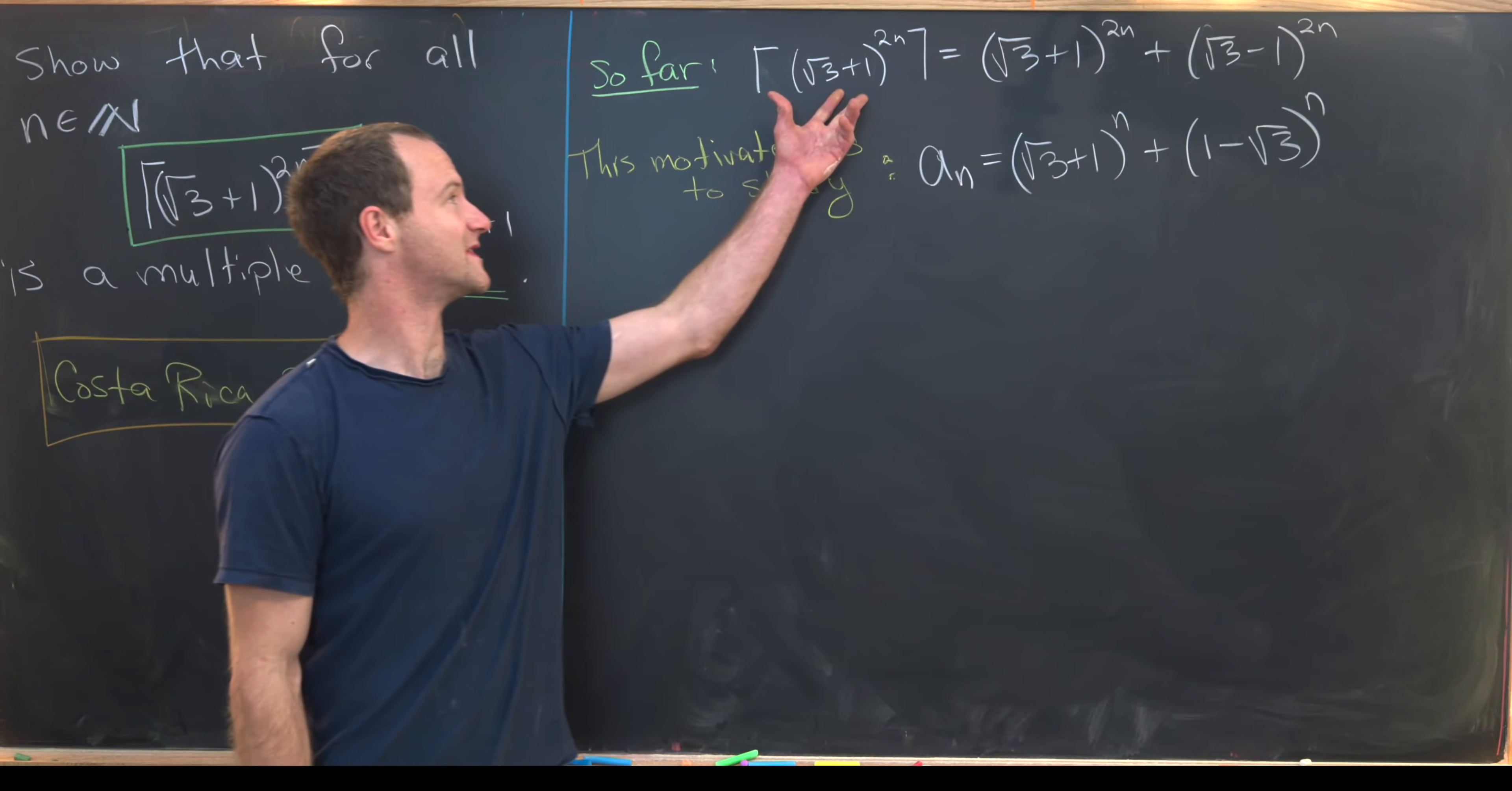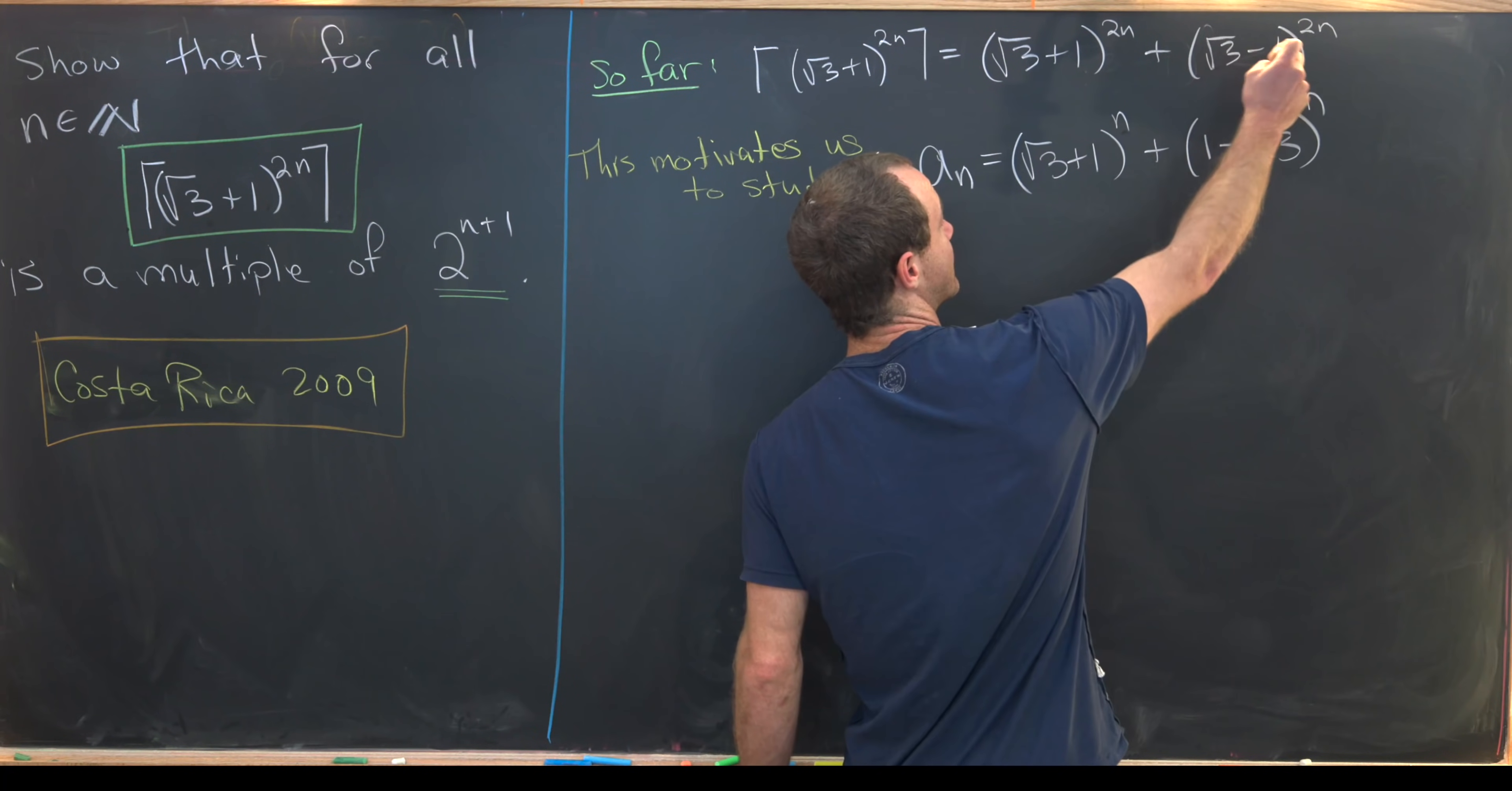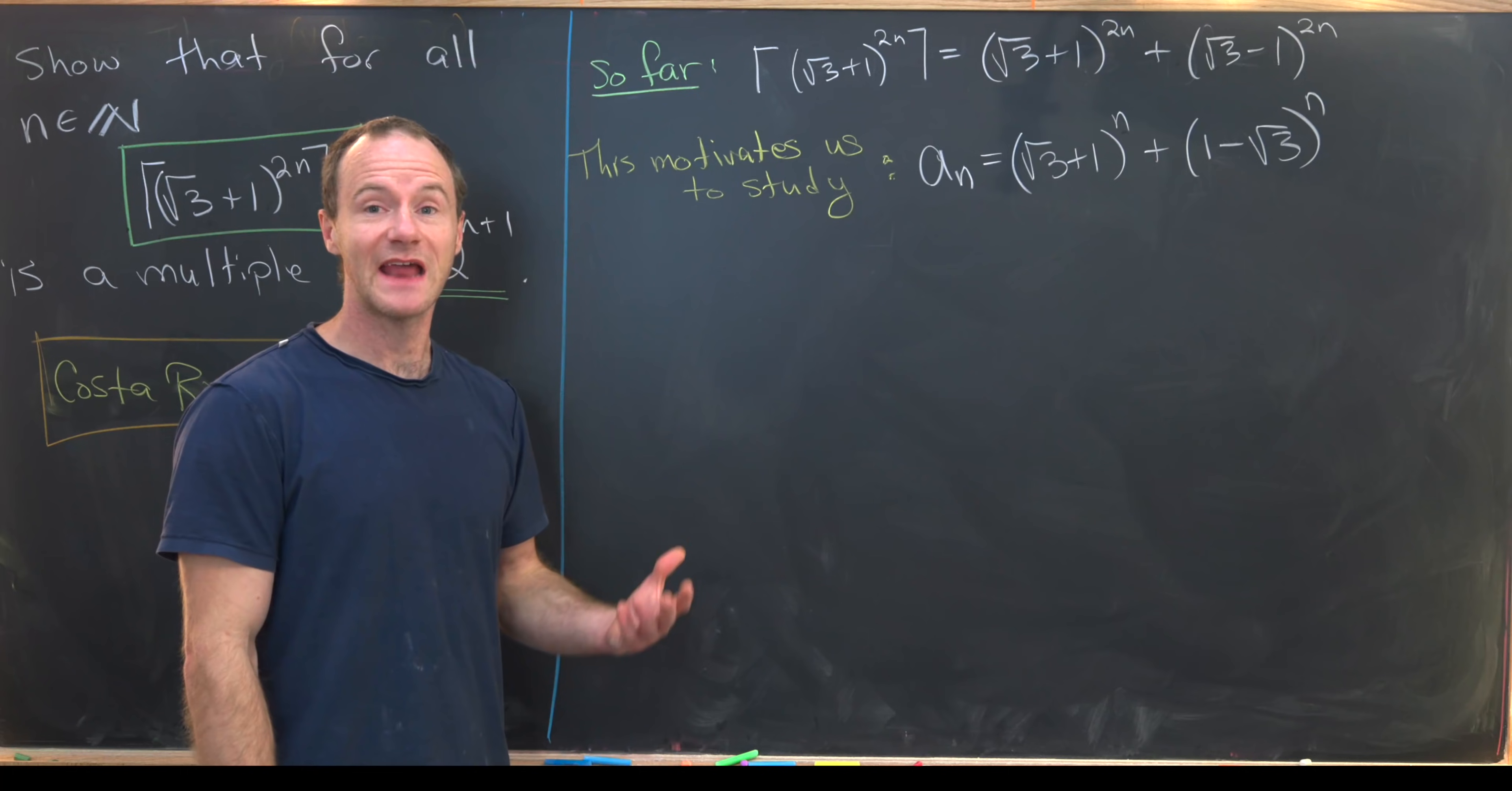On the last board, we determined that the ceiling of root 3 plus 1 to the 2n was in fact equal to root 3 plus 1 to the 2n plus root 3 minus 1 to the 2n. So that motivates us to study a little bit of a generalization of this sequence where we allow for any powers here instead of just even powers. And I switched this root 3 minus 1 to a 1 minus root 3 because otherwise the odd terms in here are not integers. But if we have it in this order, the odd terms will always be integers, which means it's a kind of more proper generalization of this right here. Notice when we've got even exponents, this guy is going to be the same thing as that guy. Now that we've got our setup, let's calculate a couple of our first terms from this sequence to see how this might work.